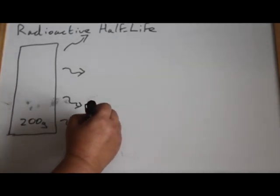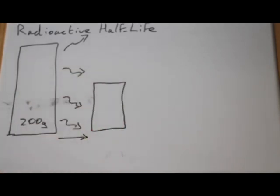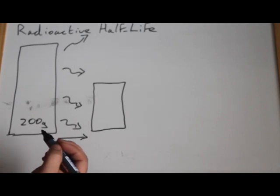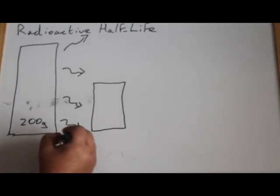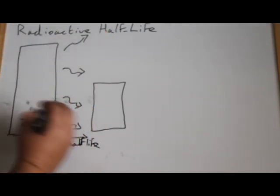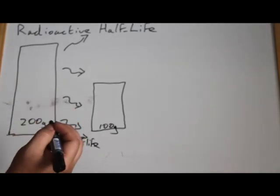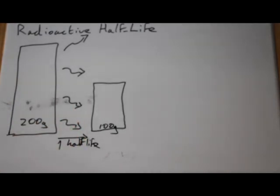After a particular amount of time, half of those radioactive atoms will have decayed or changed into something else. And that amount of time is called one half-life. So we've now only got 100 grams of radioactive material left. The other atoms have changed into something else. They may have changed into a gas and disappeared, or they may have changed into another solid and still be present. But we have only 100 grams of radioactive material left, as opposed to 200 grams at the beginning. And that's taken one half-life.